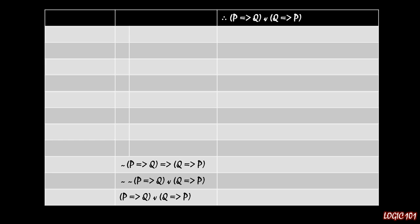Working backward gives us a big advantage: we know what we need to find with our conditional proof and what we need to assume to start it. Our conditional proof's goal is to show that 'not P implies Q implies Q implies P' is true, because if we can show that, we can use the other two lines to reach the tautology we're trying to prove. The last line of the conditional proof should be Q implies P — the consequent of the conditional statement.